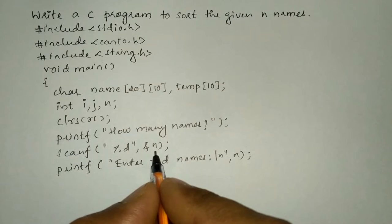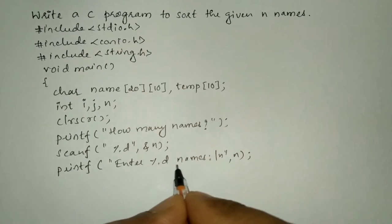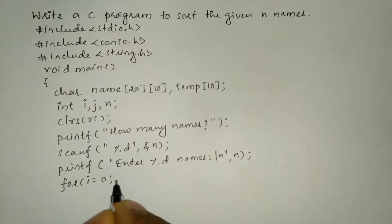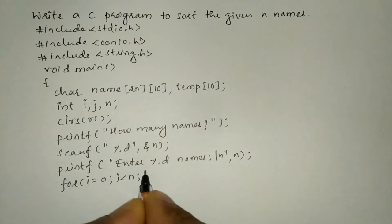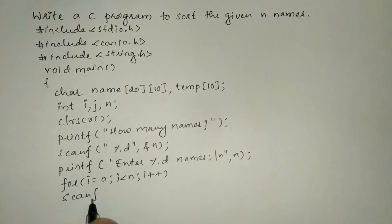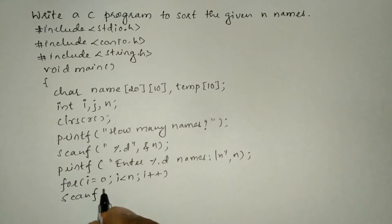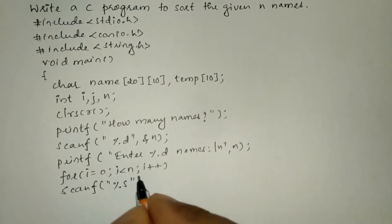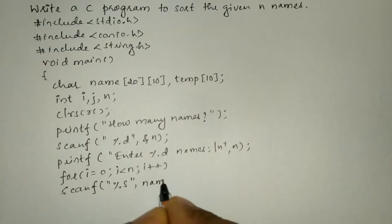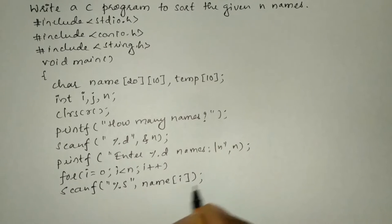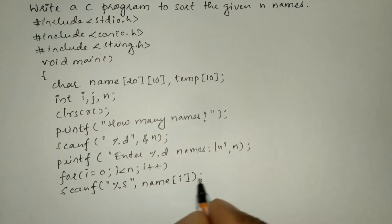Whatever value the user has entered, that same number will be printed. Now let us take a for loop with i equal to 0, i less than n, and i plus plus. We are going to receive each name through iteration using scanf with format specifier %s, comma name with index i, and put semicolon.